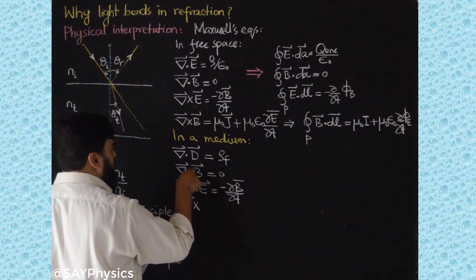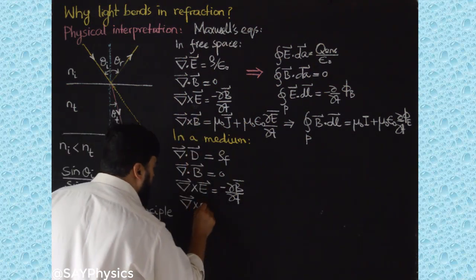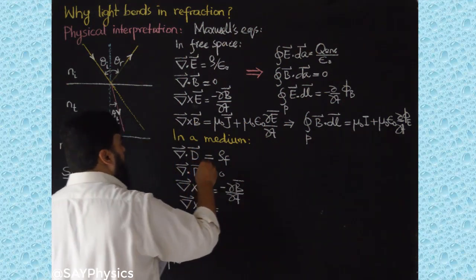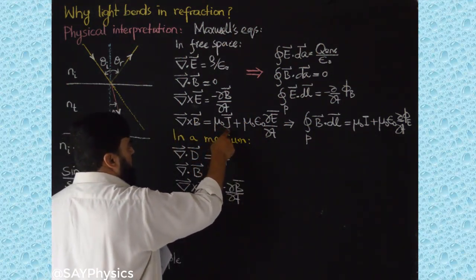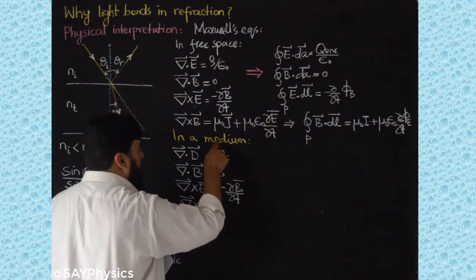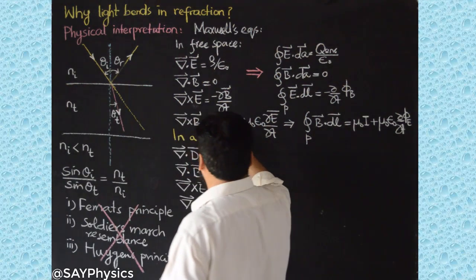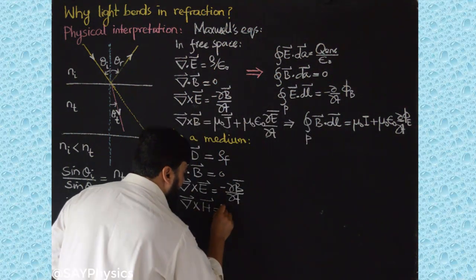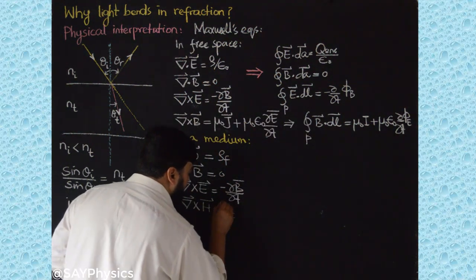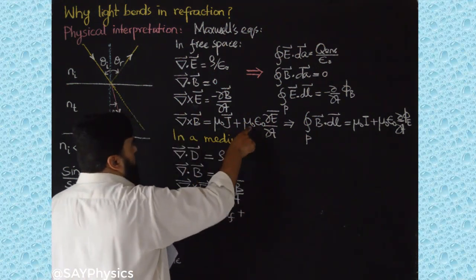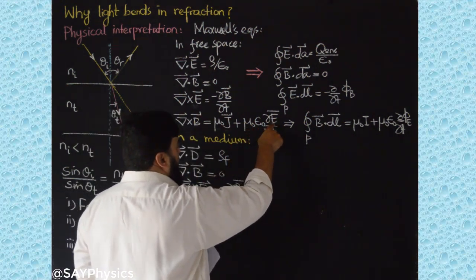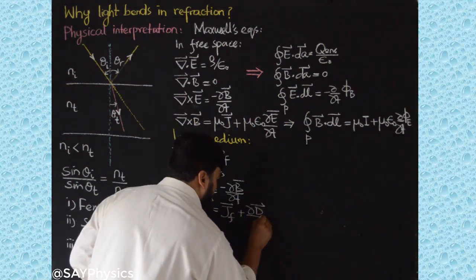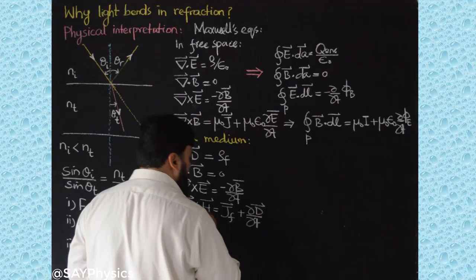B will be replaced by its counterpart which is H magnetic field, and here we will have, for the mu_0 J, we will have only mu_0 removed and J will be replaced by J_f. So we are having J_f plus, no mu_0 epsilon_0, and this will become ∂D/∂t, the electric displacement over curly t. So this set of Maxwell equations is actually in a medium.